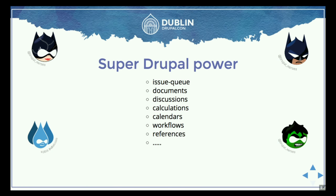Then we get to the Drupal superpower. Because we have a link from one entity to one or more components in the building, we can add issue queues, documentation, calculations, workflows, references, and all the regular Drupal site-building modules that we can download from Drupal.org.